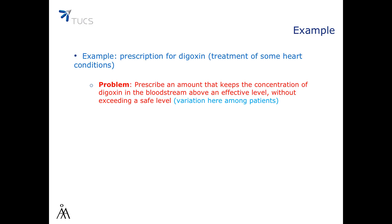Consider a medical prescription for digoxin. The problem is to prescribe an amount that keeps the drug concentration in the bloodstream above a certain effective level but below a safe level. The model we want to build should answer two questions: what's the decay of a single dose, and what dose is to give to the patient?